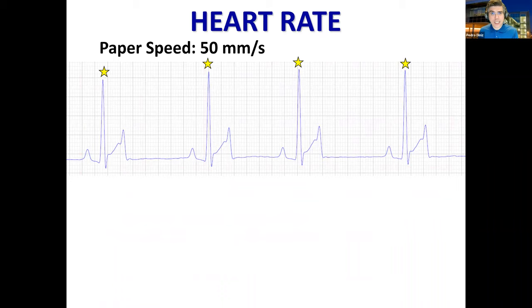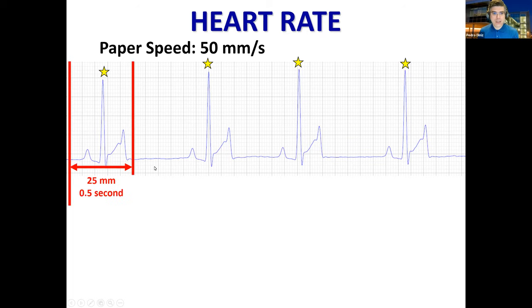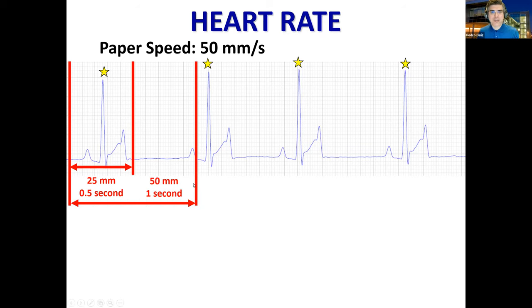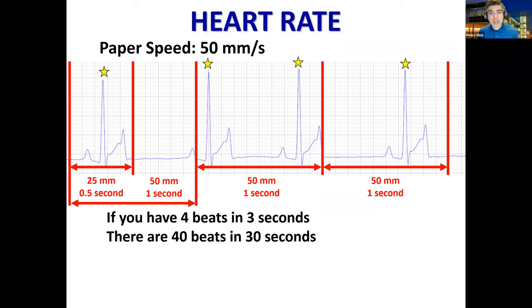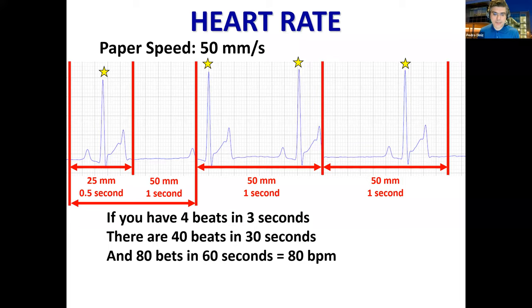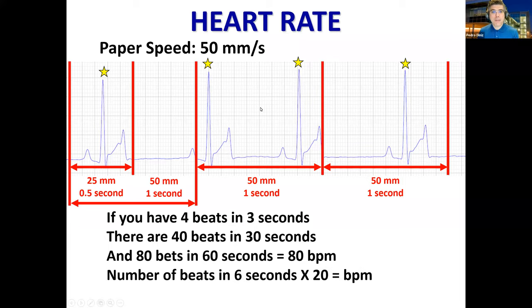If you're presented with an ECG at 50 millimeters per second, the ECG is spread across a longer space, so you'll need to multiply by twice as much. Here we have four beats. I counted 25 millimeters, but at 50mm/s that's only half a second — you need 50 millimeters to make 1 second. In this case, I have just 3 seconds and 4 beats, so 40 beats in 30 seconds gives 80 beats per minute — multiplying by 20 instead of 10 because the speed is twice as fast.